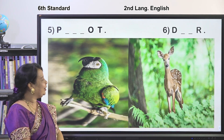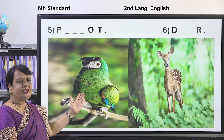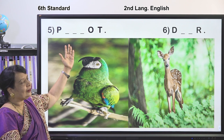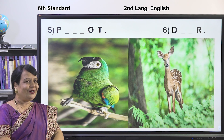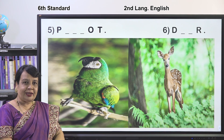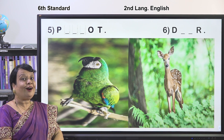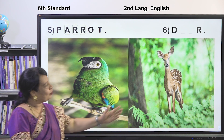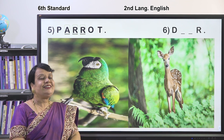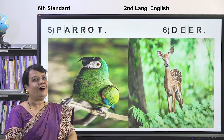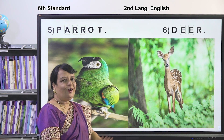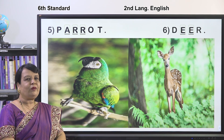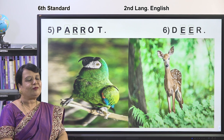I have two more animals. Which is this? P-A-R-R-O-T — it is a parrot. What about this? It is a deer — D-E-E-R. All these are animals; some are very beautiful and children love animals.